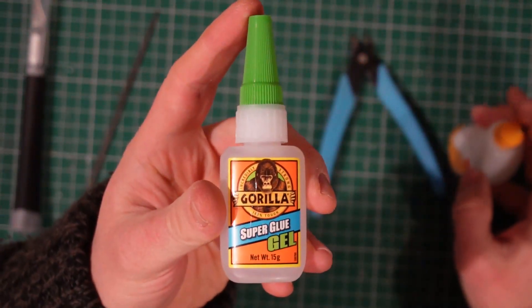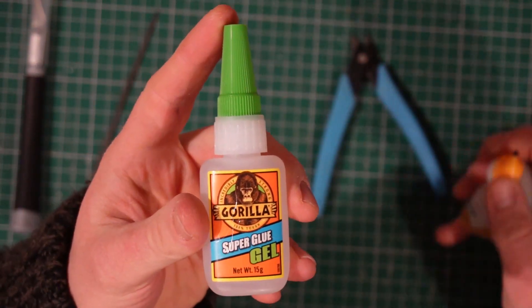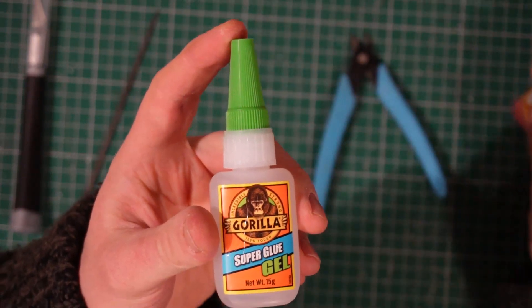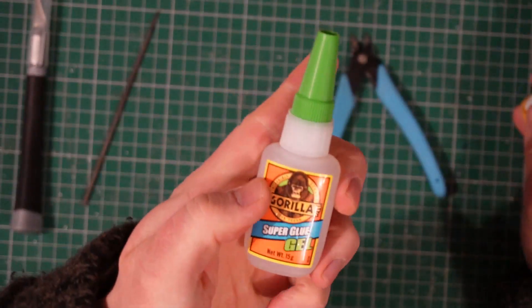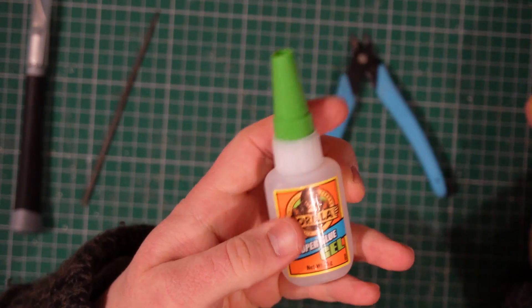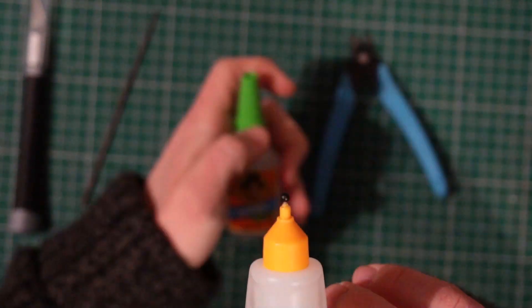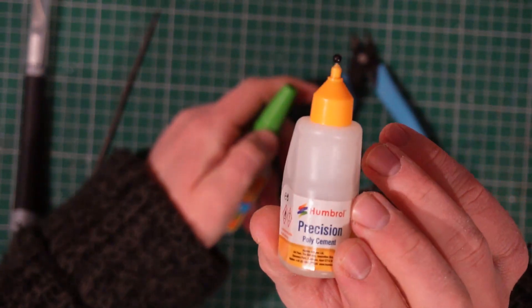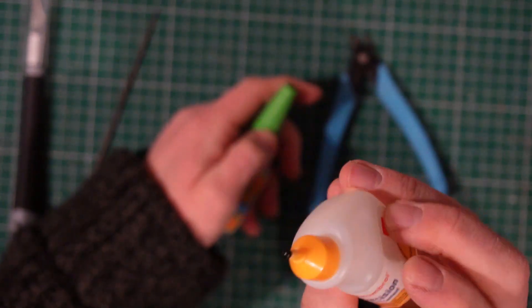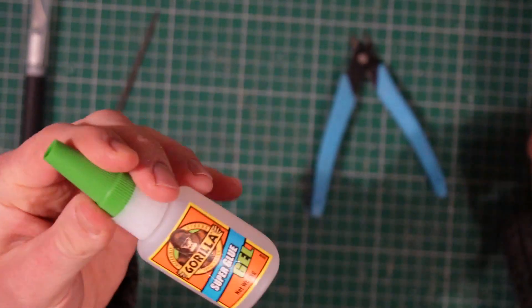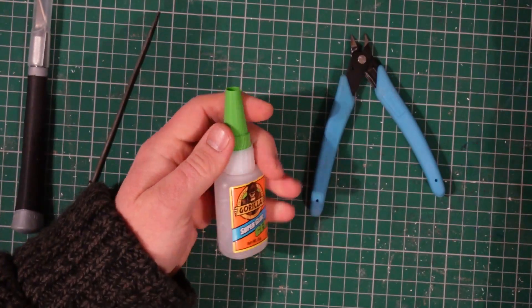So this is Gorilla Glue, the gel form of super glue which is perfect because it doesn't run or go anywhere, it goes exactly where I dab it, so that's the one I usually use for model making. And then the other stuff I tend to use is poly cement, which basically welds the plastic together by melting the two surfaces. It's great for model making, but for ease of use I'm just going to stick with the super glue for this tutorial.